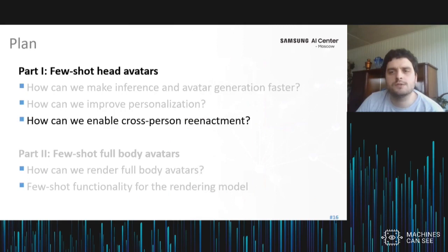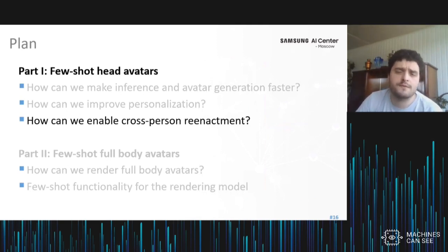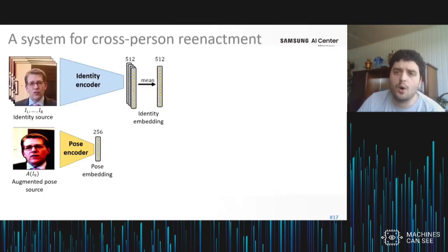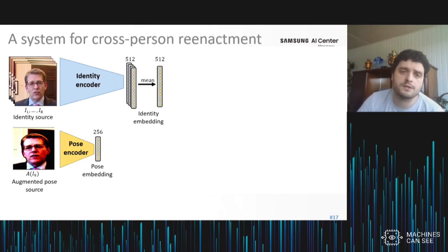The model I just described uses facial keypoints to drive the animation, and using keypoints comes with its own problems. Keypoints are person-specific, so you cannot really drive a celebrity with someone else's keypoints. Also, there is a limited degree to which keypoints represent the actual mimics. To address this limitation, we learn a new pose representation together with the whole avatar system. We train the whole thing on a large dataset of videos using solely reconstruction losses.